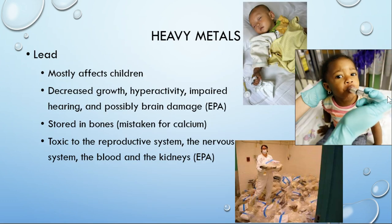Lead is the other major heavy metal. Lead mostly affects kids, partly because kids eat random stuff. If you think about lead paint, kids often eat playground dirt which may contain lead. Lead entered the environment through two big routes: leaded gasoline — burning it put lead into the air — and lead-based products like lead paint.